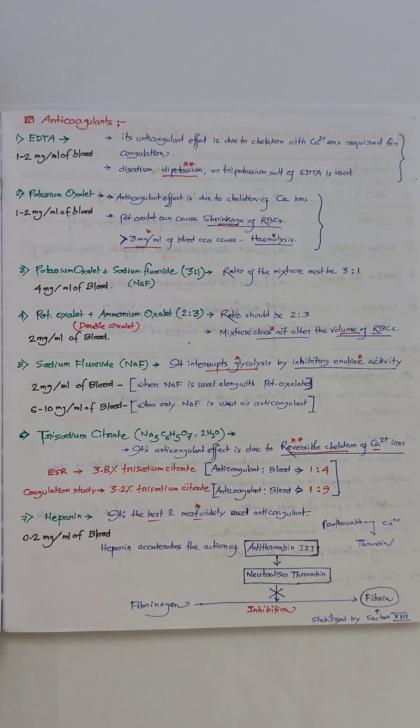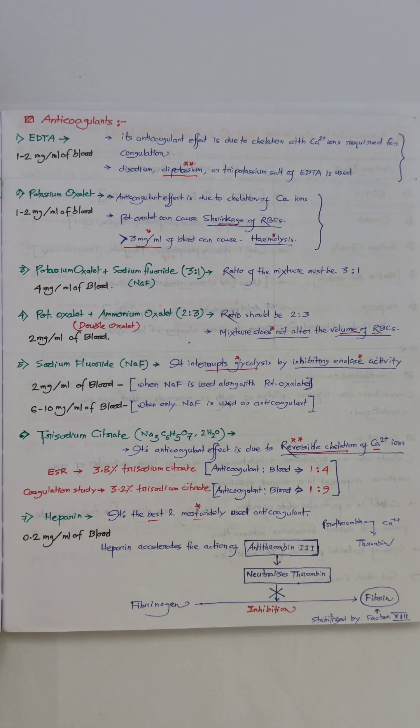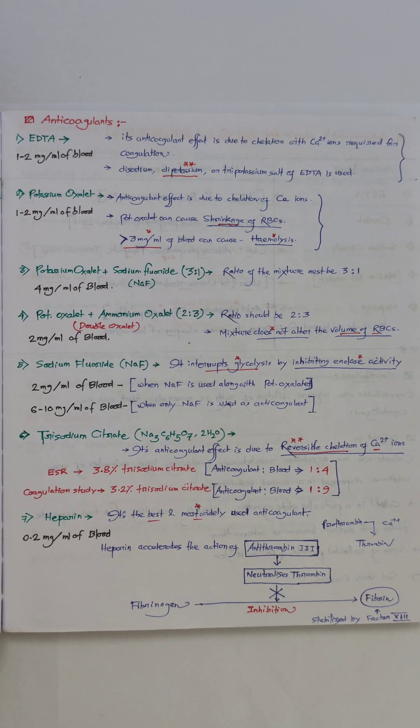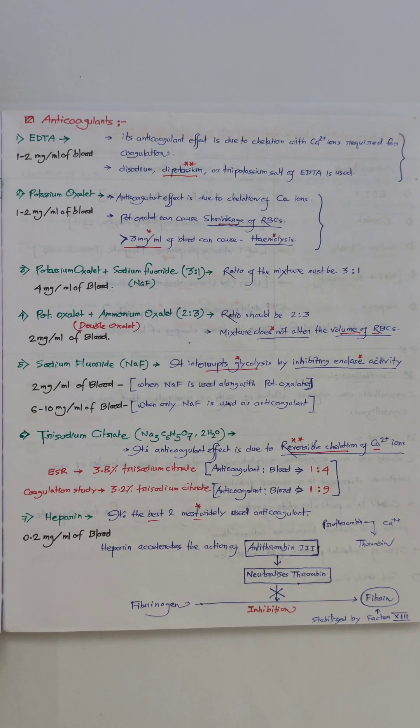Number six, trisodium citrate: Na3C6H5O7·2H2O. Its mode of action is due to reversible chelation of calcium ion. Calcium ion is very important in the coagulation pathway—it converts prothrombin to thrombin.